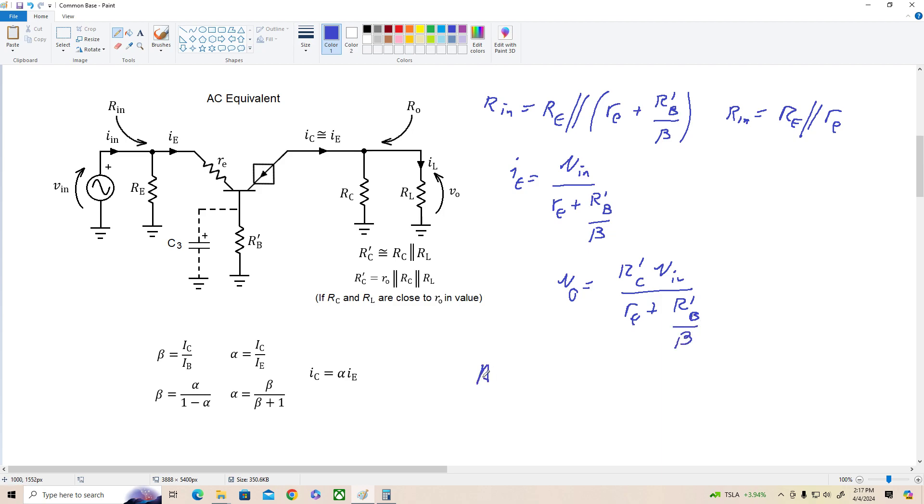Now remember voltage gain is Vout over Vn, so if I divide both sides of this equation by Vn, we get voltage gain equals R prime C divided by little re.